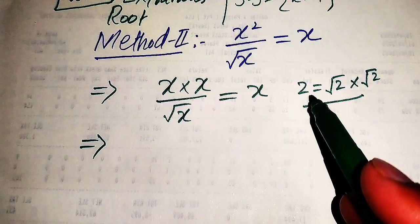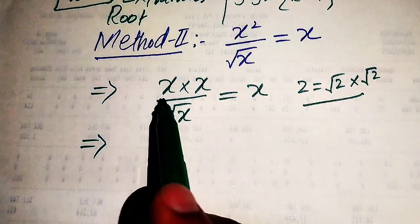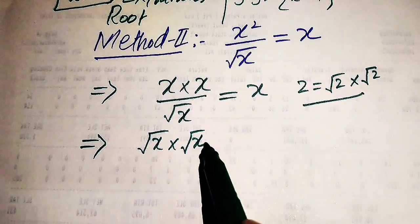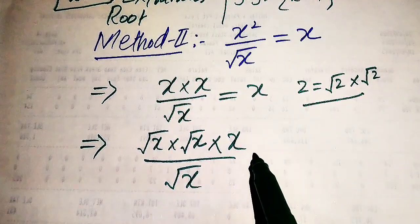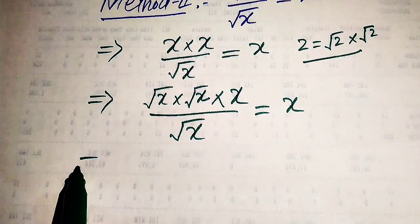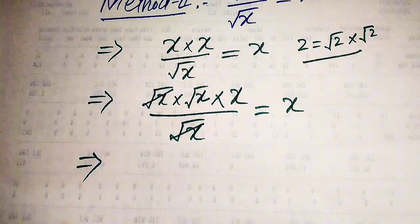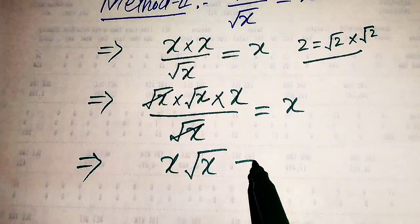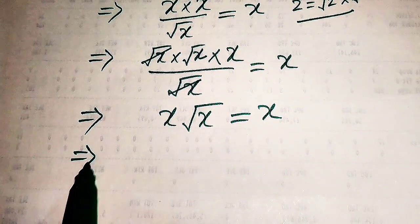We use the rule that a number can be written as the product of two square roots — for example, 2 equals √2 times √2. Applying this, we rewrite x as √x times √x, so the numerator becomes √x times √x times x, all divided by √x, equals x. The √x in the numerator and denominator cancel, leaving x times √x equals x.